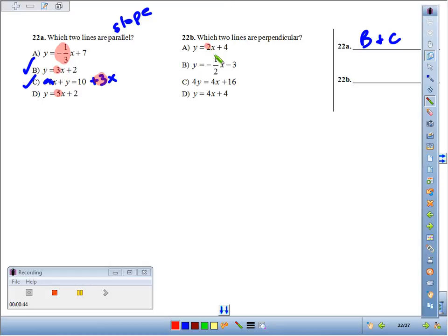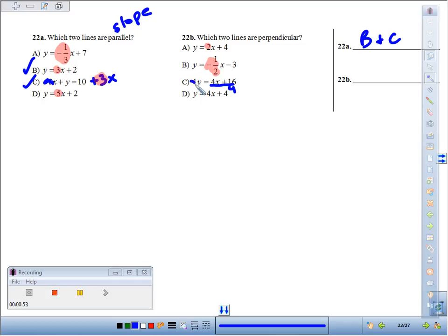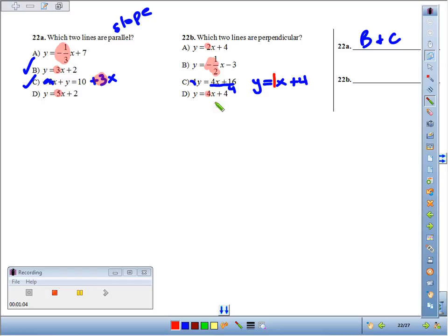In A, the slope is 2. In B, it's negative one-half. In C, we're going to have to divide by 4 first, and if you divide 4x plus 16 divided by 4, you're going to get y equals—4x divided by 4 is just x, 16 divided by 4 is 4—so the slope here is 1, and the slope in line D is 4.